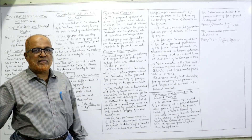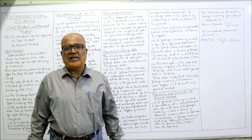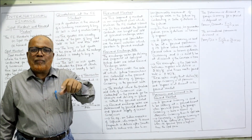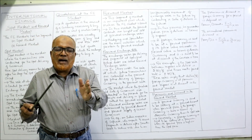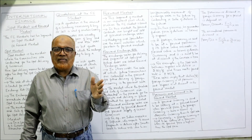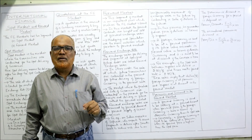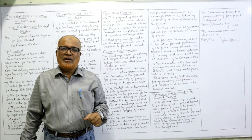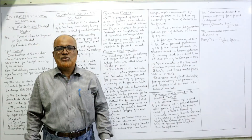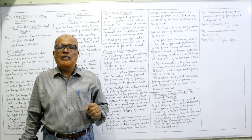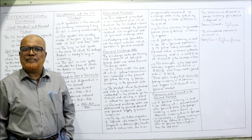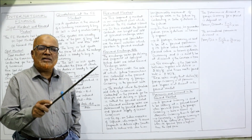In the forward market we have the forward exchange rate, which is different from the spot exchange rate. The forward exchange rate is the rate for delivery and payment at specified future dates. For example, two parties enter a contract on 1st January to buy and sell foreign currency, but the transaction takes place on 31st March. The contract is entered now, the rate is fixed now, but delivery and payment will be made on the future date.